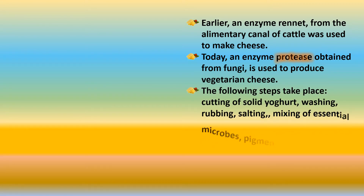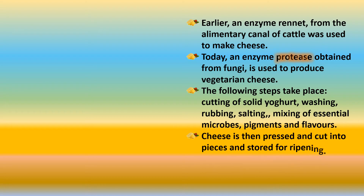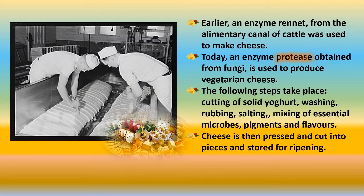The following steps take place after curd formation: cutting of solid yogurt, washing it, rubbing it, salting it, mixing in essential microbes, pigments for color, and flavors for taste. Cheese is then pressed and cut into pieces and stored for some time for ripening. On a large scale, the milk arrives in a huge trough, the bacterial strains are added, it forms a yogurt-like mass, the whey is drained out, then it is patted down, rubbed, salted, pressed, cut into pieces, and stored for ripening.